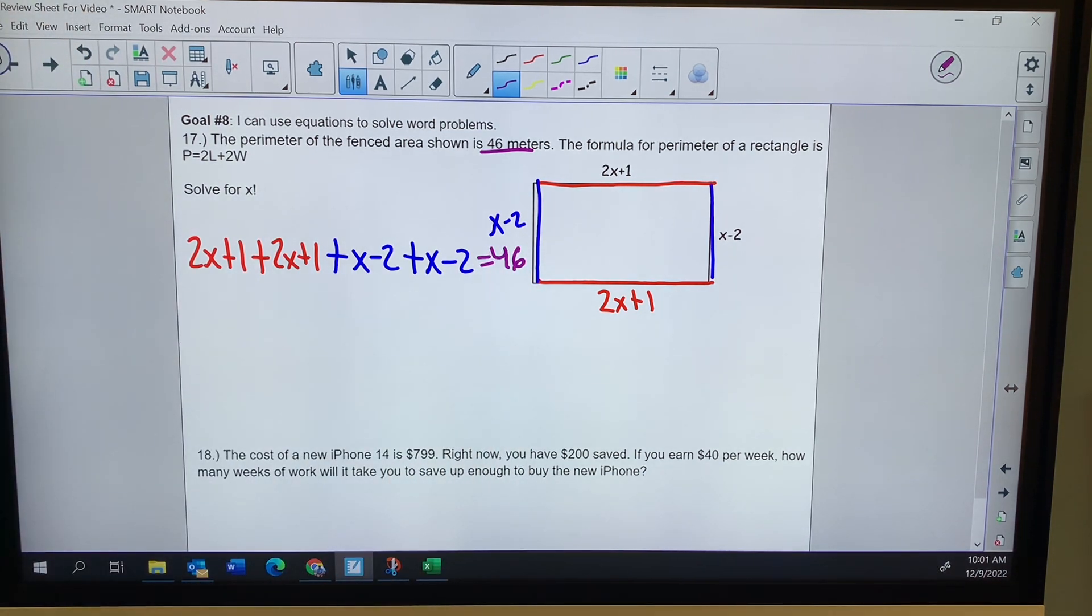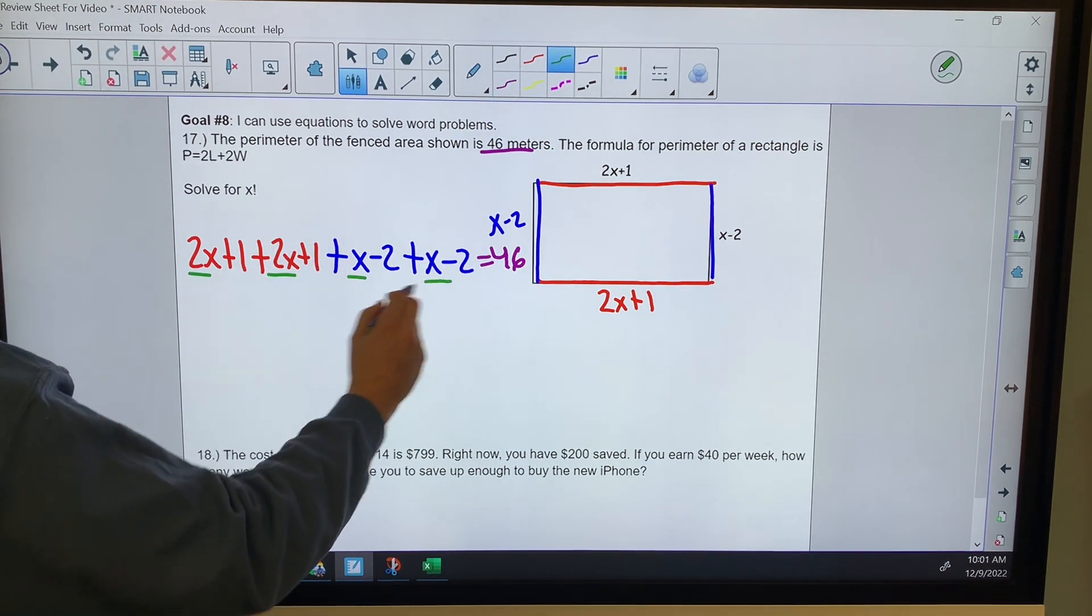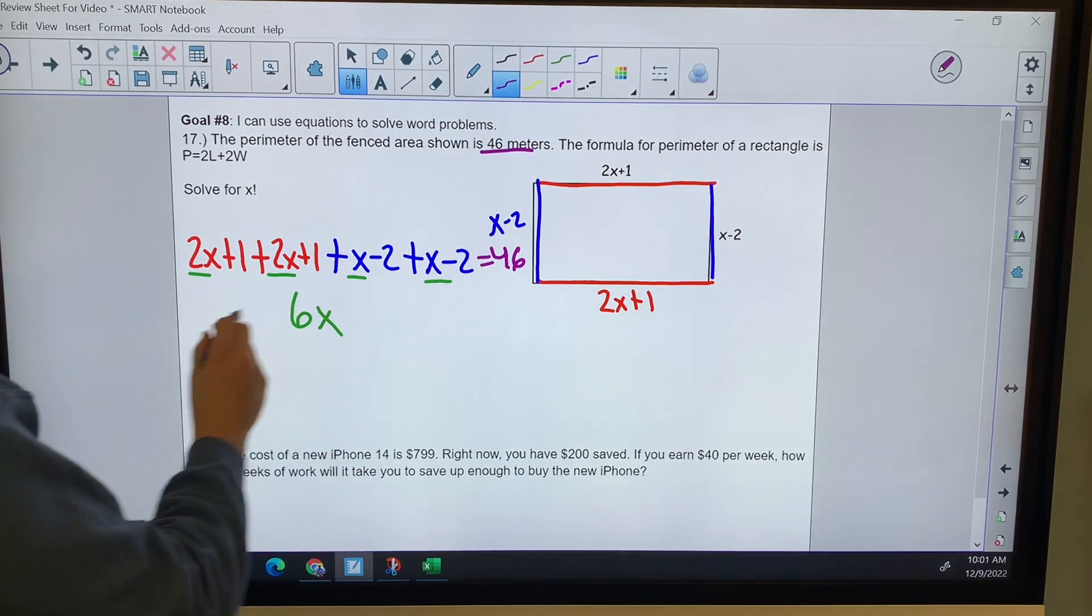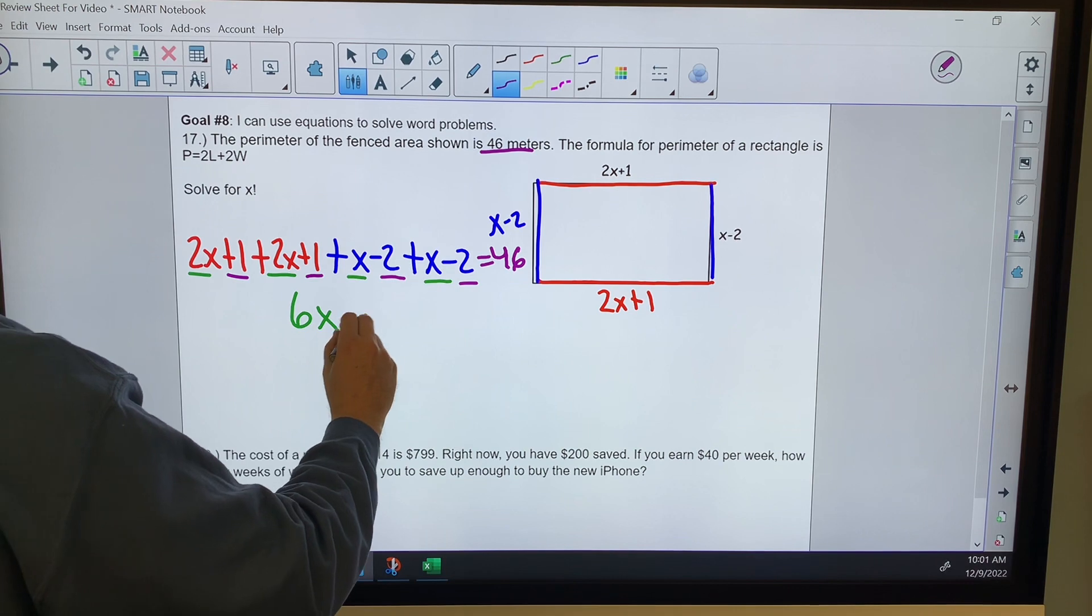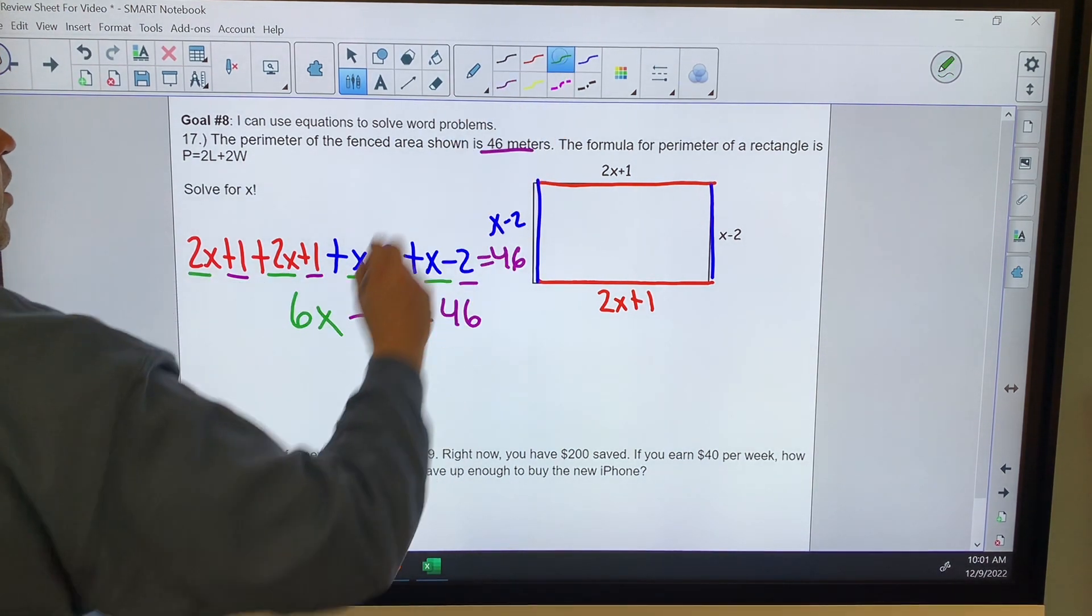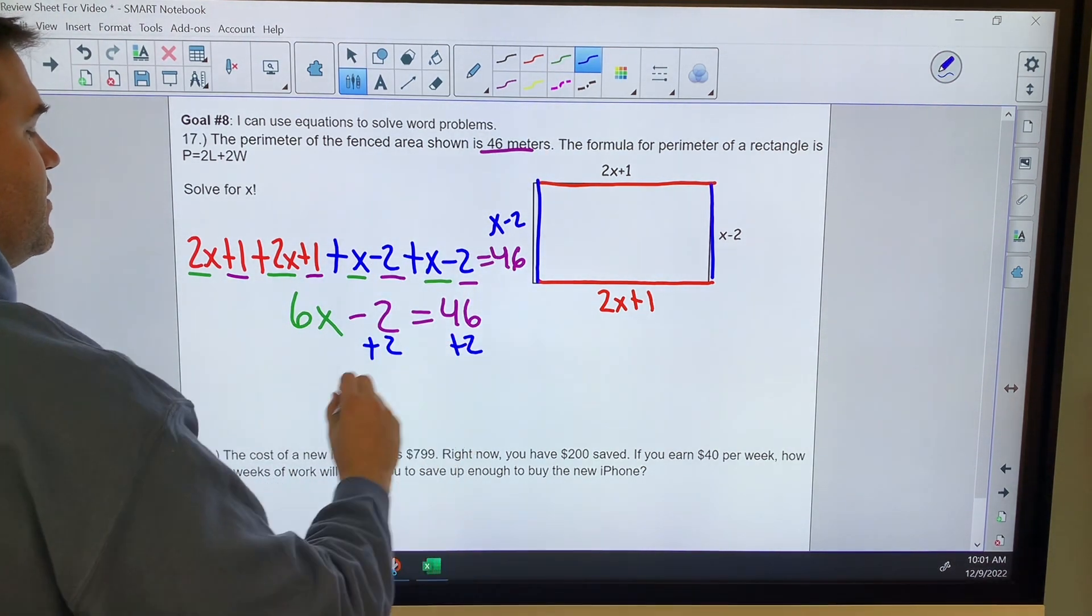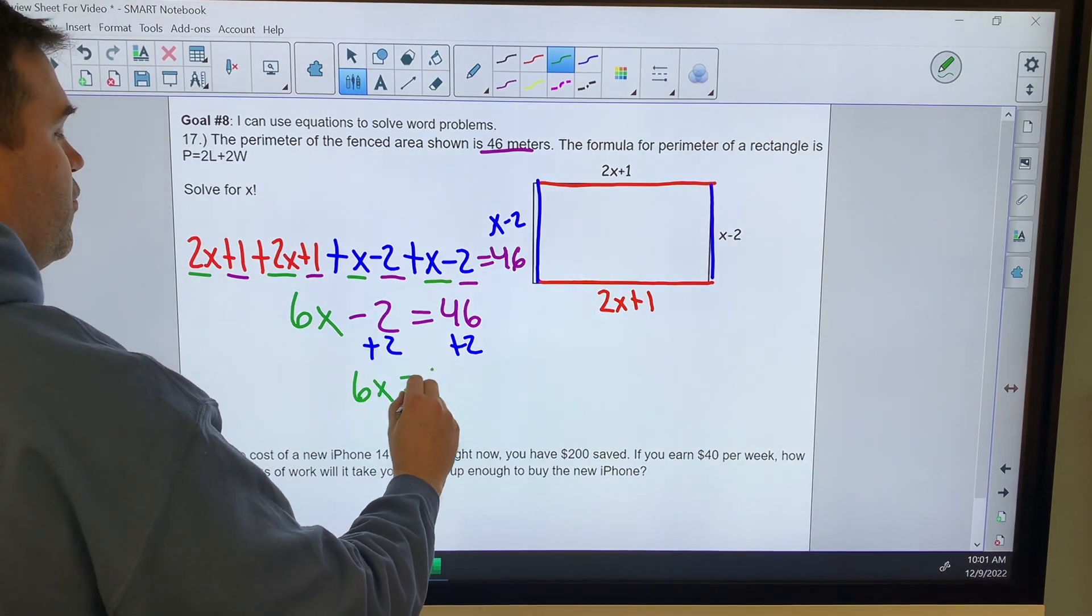Adding together the x terms, 2, 4, 5, 6. Those are 6x's. Adding together the constant terms, 1, 2, 0, minus 2 is equal to 46. We're going to add 2 to both sides, leaving me with 6x is equal to 48.